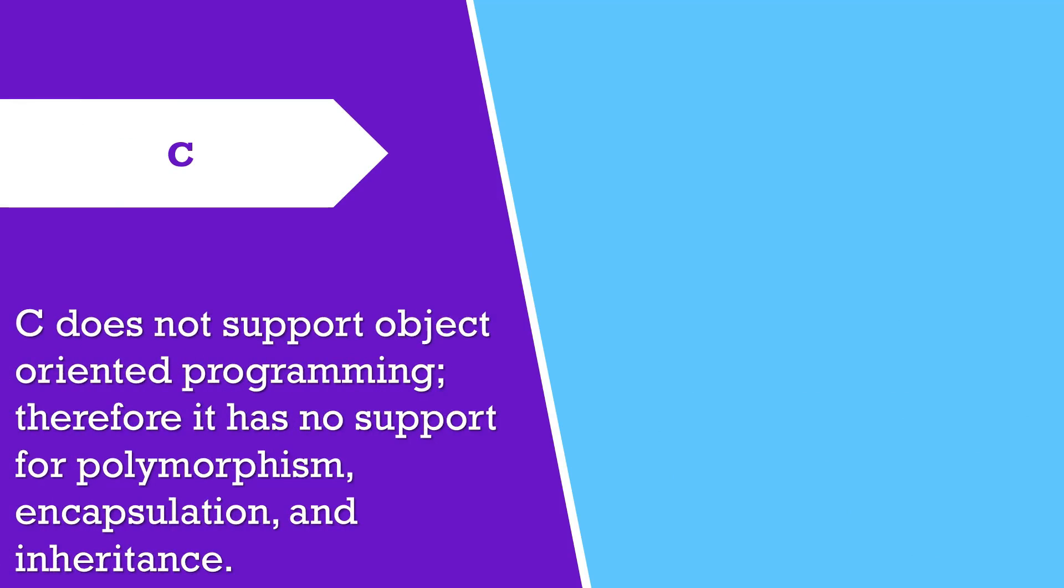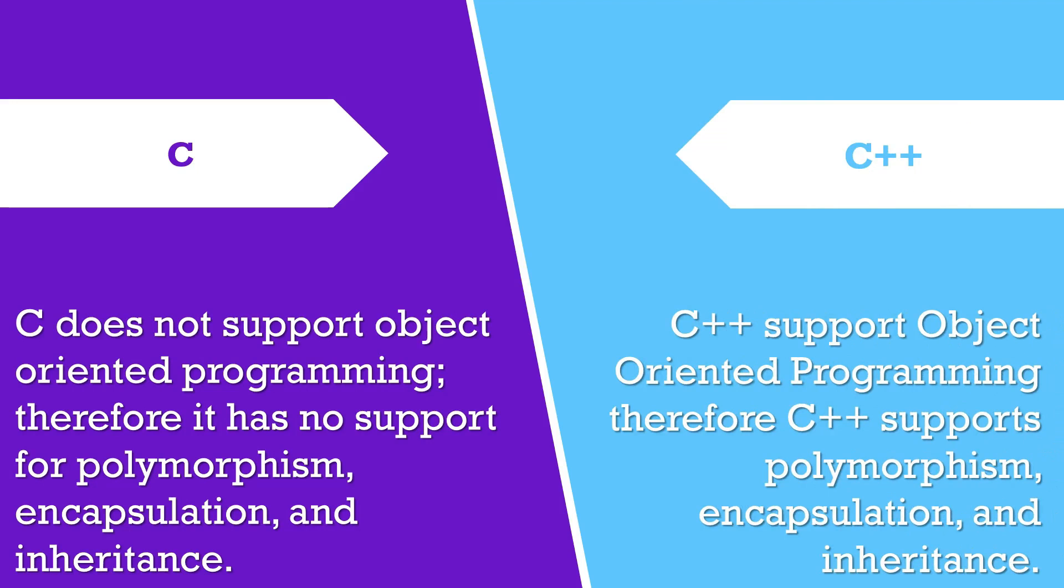C does not support object-oriented programming, therefore it has no support for polymorphism. C++ supports object-oriented programming, therefore C++ supports polymorphism, encapsulation, and inheritance.